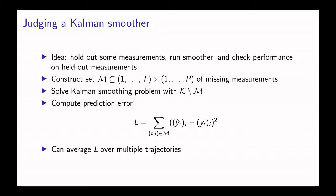More concretely, we construct the set script M of missing measurements, and then we solve the Kalman smoothing problem with hiding those measurements. Then we compute the prediction error, which is the sum of the square differences between our predicted measurement and the actual measurement in all the missing entries.